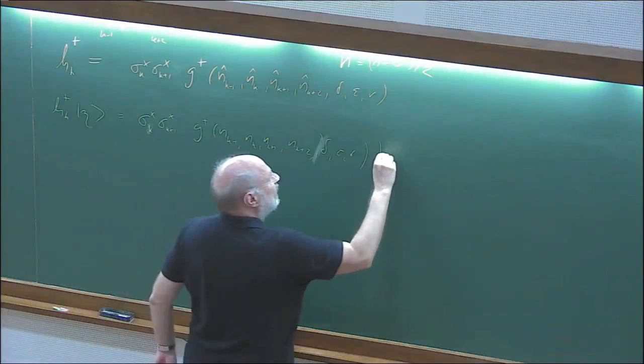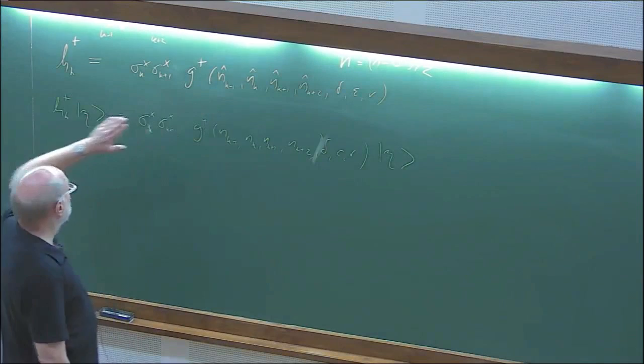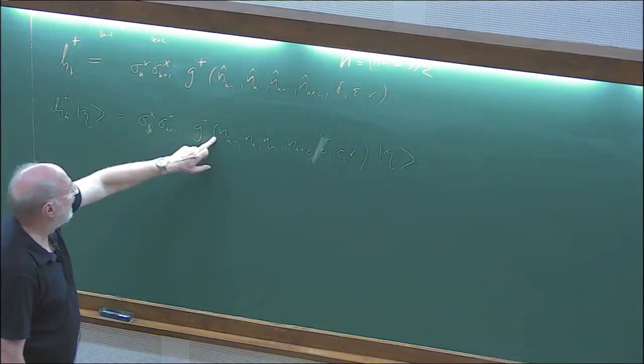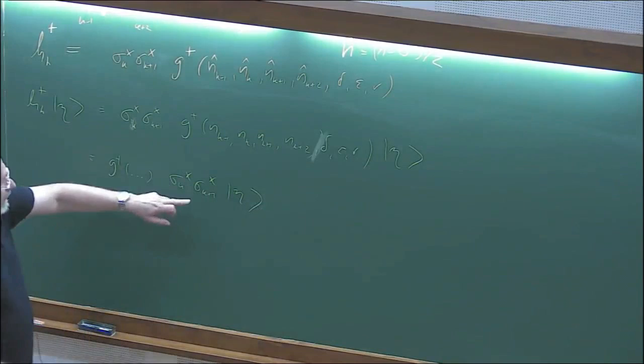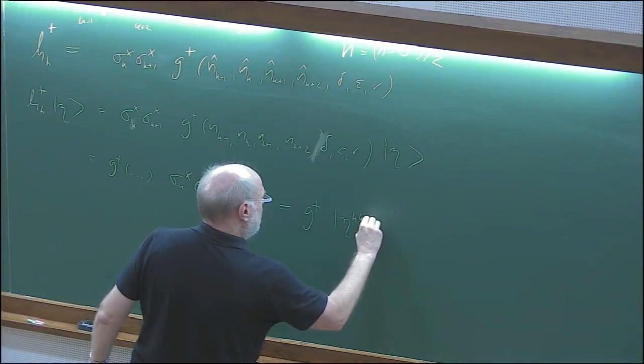So the way it works: you take a function, and to get the matrix form you replace the N's by the N-hat operators. This gives you the function as a number, which commutes with sigma_X. So H_K+ equals G+ times sigma_K^X sigma_{K+1}^X applied to eta, which generates G+ times eta^{K,K+1}—the original configuration with occupation numbers at K and K+1 interchanged.